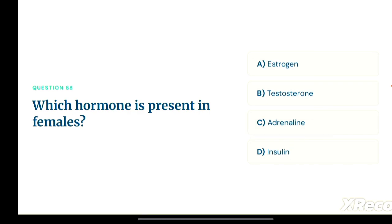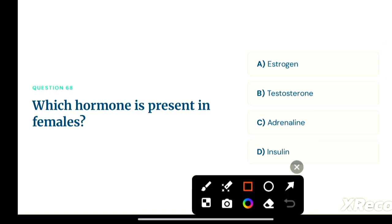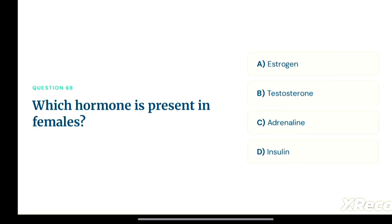Next question: which hormone is present in females? Option A: estrogen, option B: testosterone, option C: adrenaline, option D: insulin. The correct answer is option A, estrogen. Estrogen is the hormone present in females.